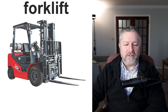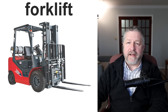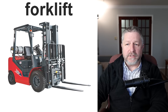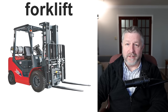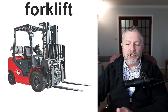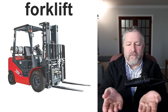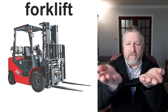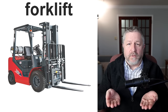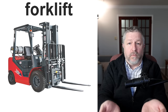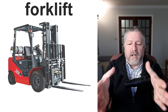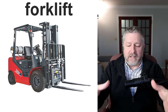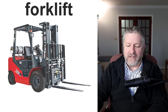A forklift is something you would find in a factory, a warehouse, or a lumber yard. It's a very slow vehicle that is really good at lifting things. The two things on the front are called the forks — that's why we call it a forklift. The forks will go under a pile of wood or into a pallet, which is a wooden or plastic structure that we stack things on.